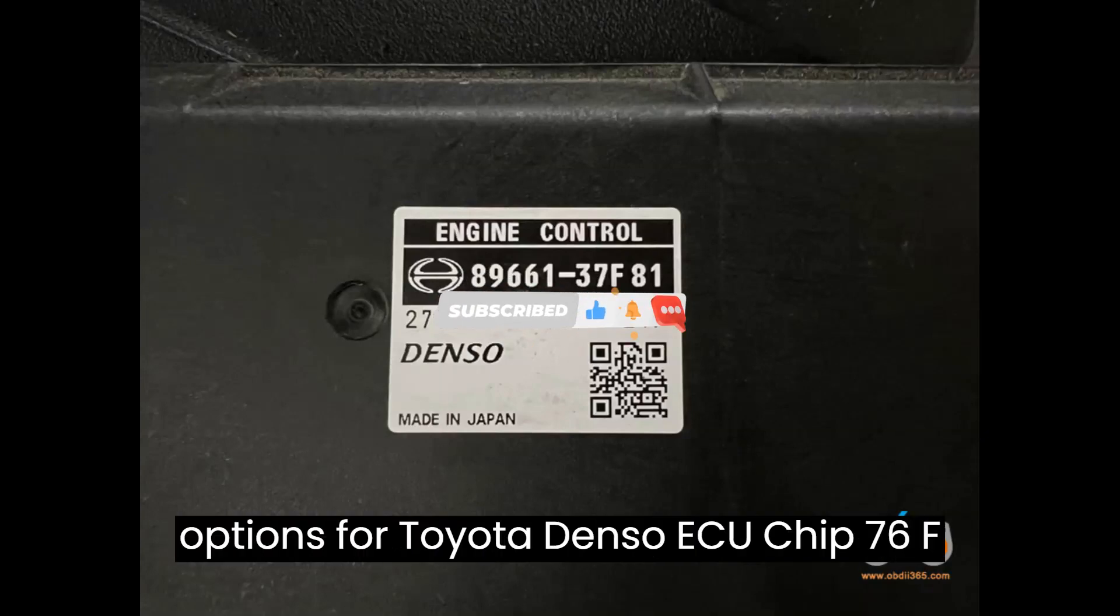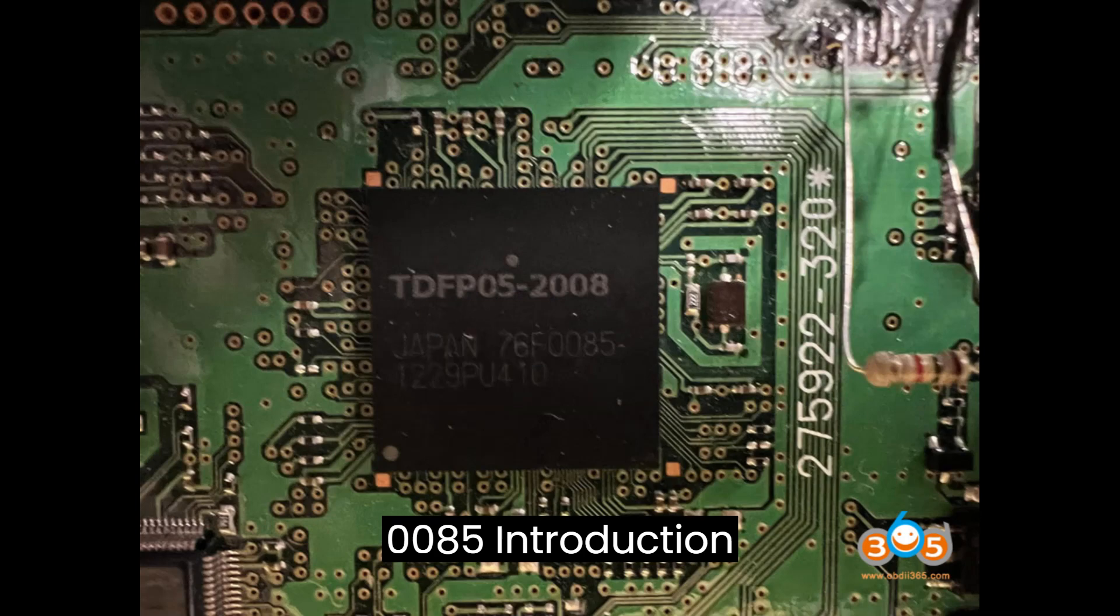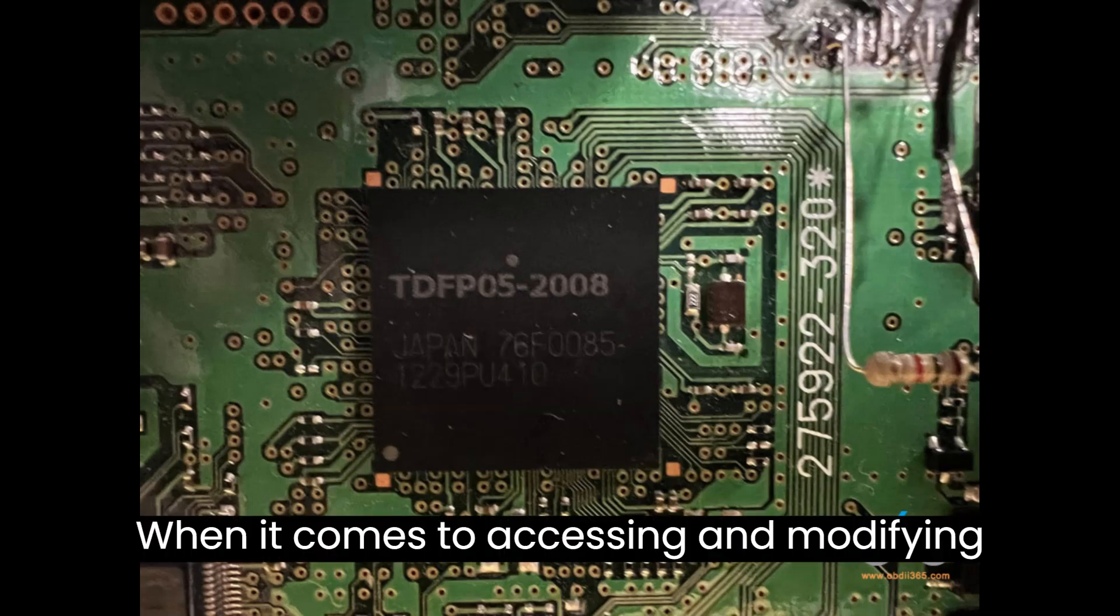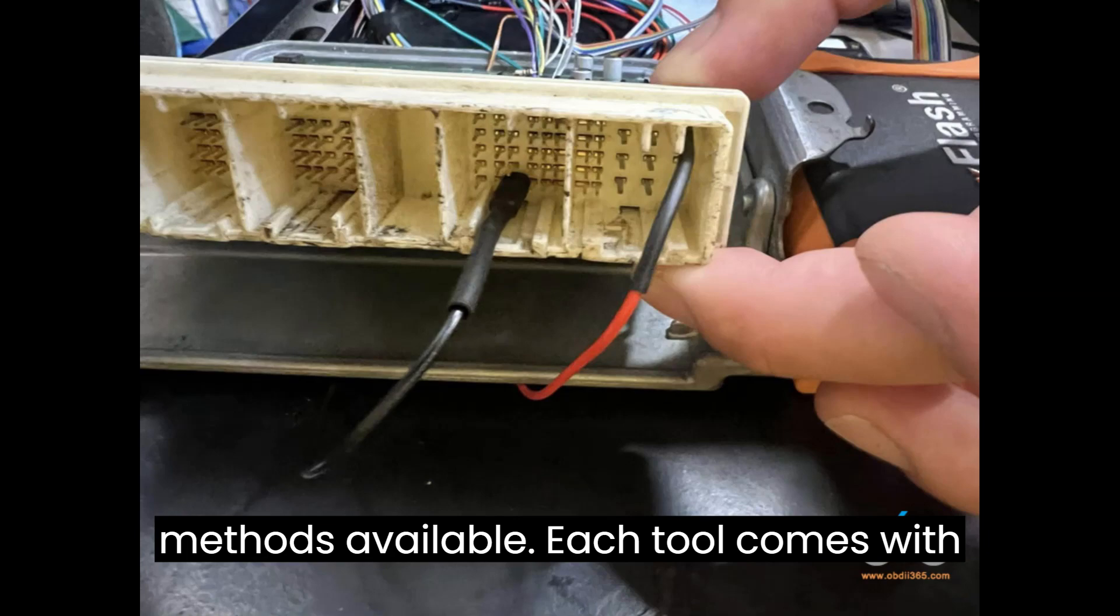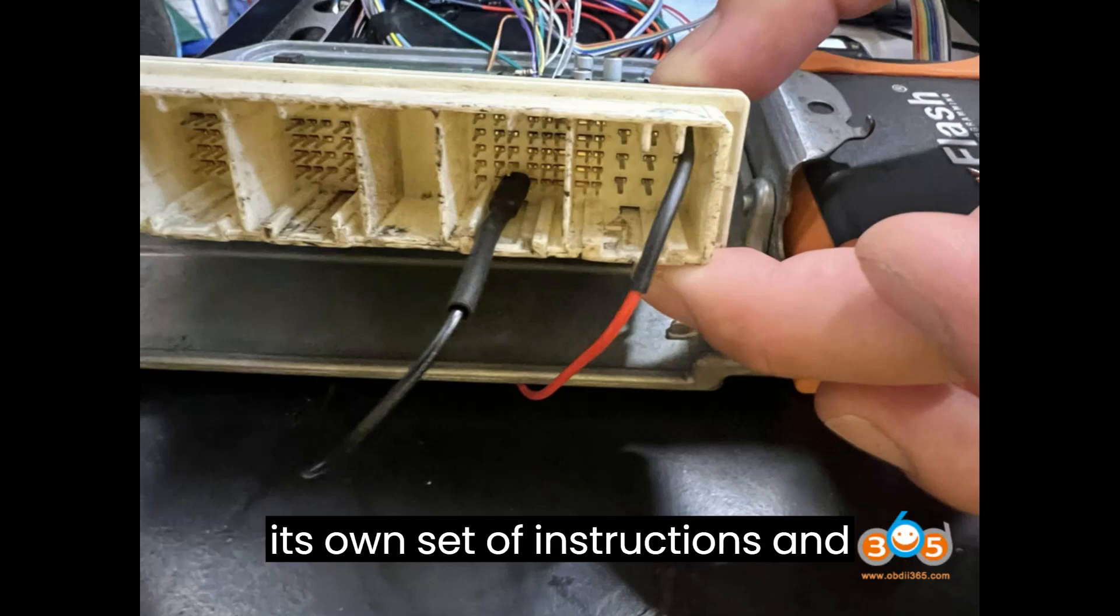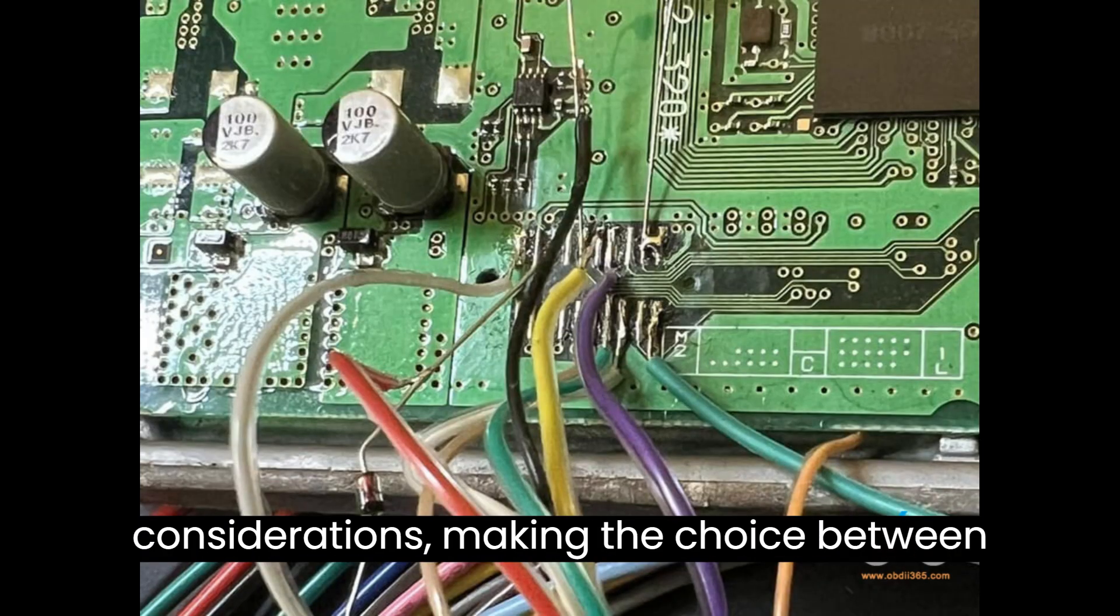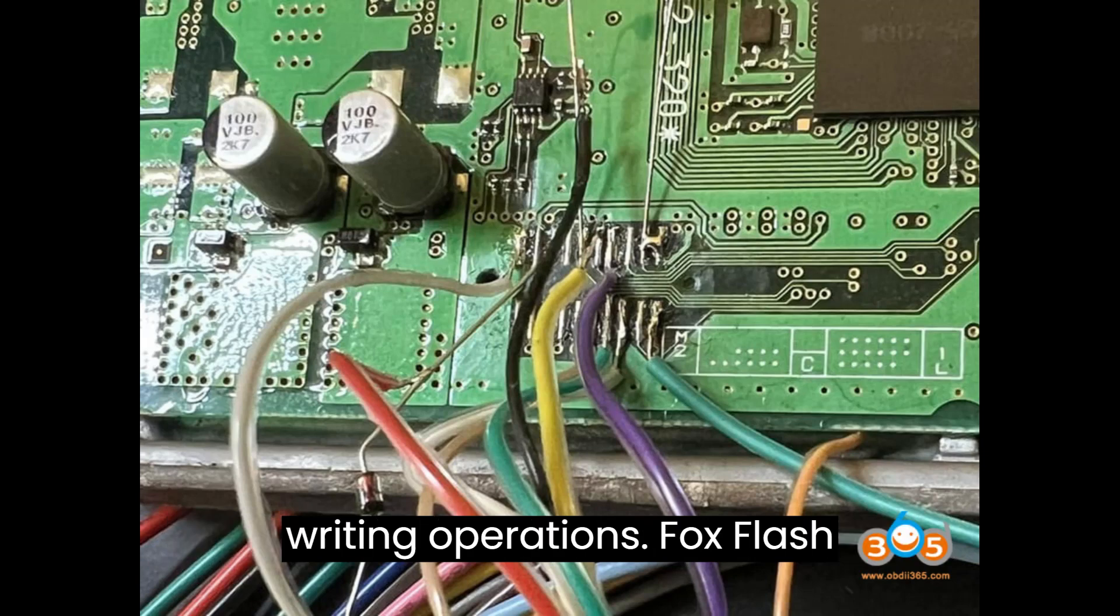When it comes to accessing and modifying the Toyota Denso ECU Chip 76F0085, there are several tools and methods available. Each tool comes with its own set of instructions and considerations, making the choice between them crucial for successful reading and writing operations.